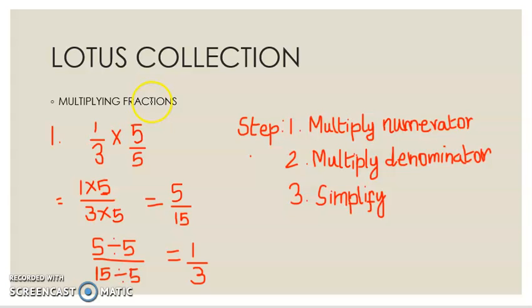Now see the example. The numerator is 1 and 5. You have to multiply 1 times 5. Then denominator 3 and 5, 3 times 5. We get 1 times 5 is 5, then 3 times 5 is 15. Next, the third step is simplify. 5 divided by 5, then 15 divided by 5.